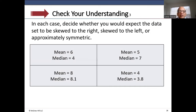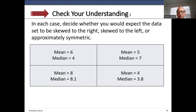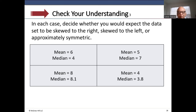In each case, decide whether the dataset is skewed right, skewed left, or approximately symmetric. First: mean = 6, median = 4 — mean greater than median — skewed to the right. Second: mean = 5, median = 7 — mean less than median — skewed to the left. Third: mean = 8, median = 8.1 — approximately the same — approximately symmetric. Fourth: mean = 4, median = 3.8 — close enough — approximately symmetric.